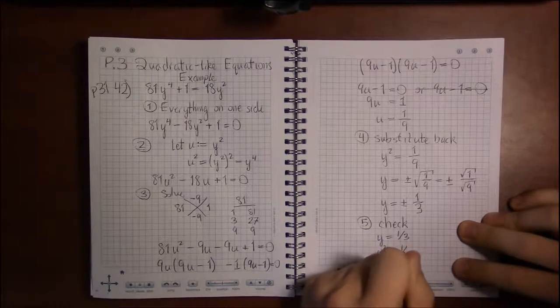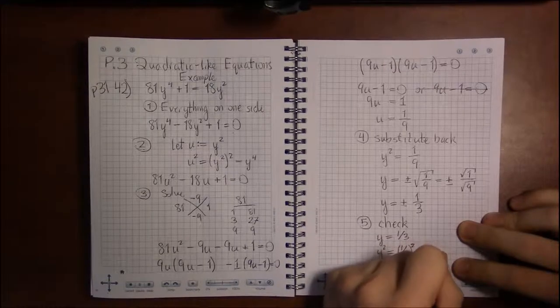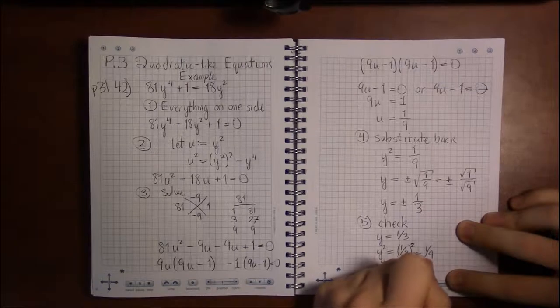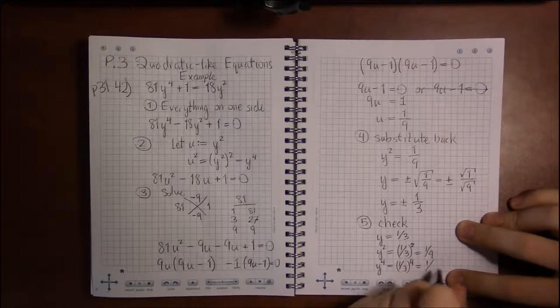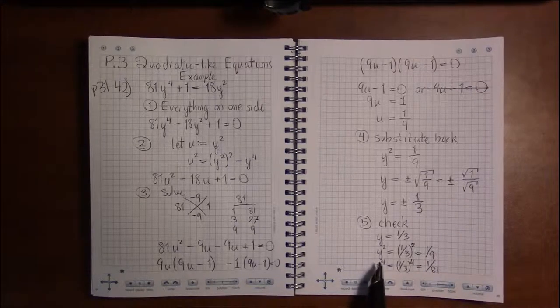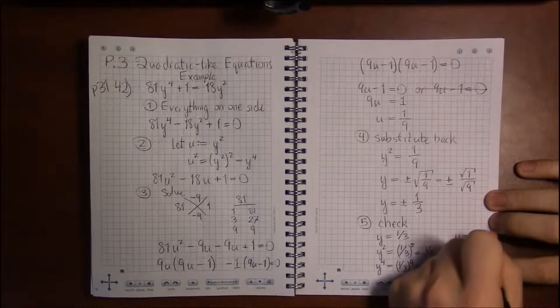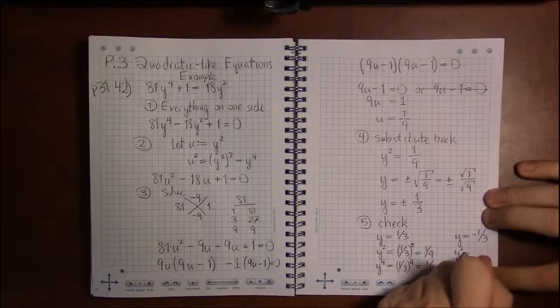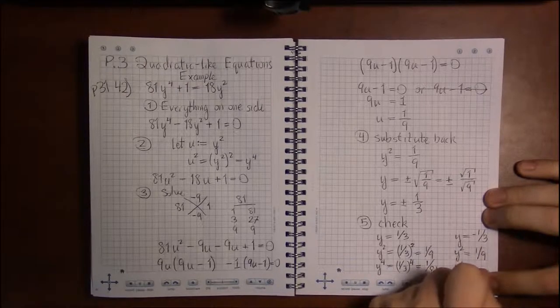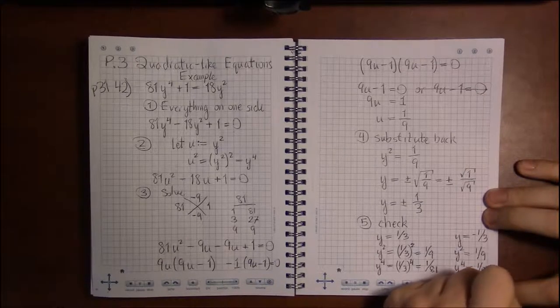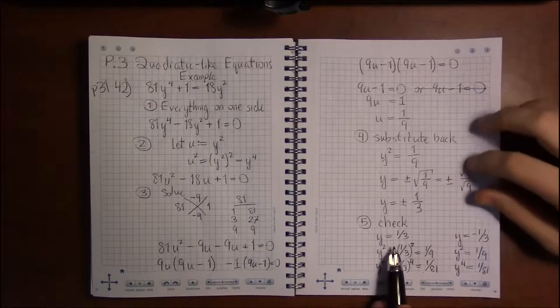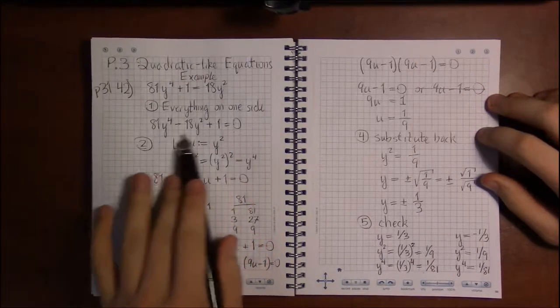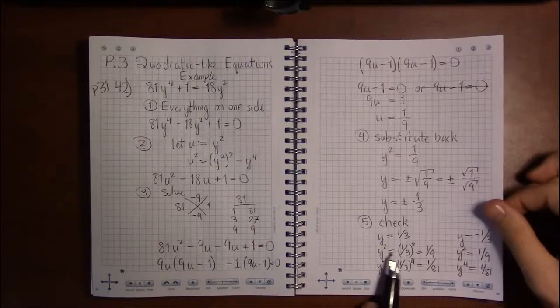So this is fairly easy to check. Because we're just dealing with y squared. So if y is one third, y squared is a third squared, which is one ninth. And y to the fourth is just a third to the fourth. One to the fourth is one. Three to the fourth is 81. And it turns out, we can save ourselves a bit of time. If y is minus one third, y squared is the same thing as it is over here. It's positive one ninth. And y to the fourth is the same thing. Regardless of whether y is positive one third or negative one third, y squared and y to the fourth, the things we're going to use to check this equation, are both the same. So we just have one thing to check.